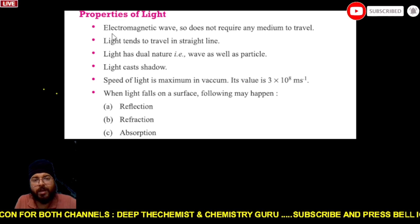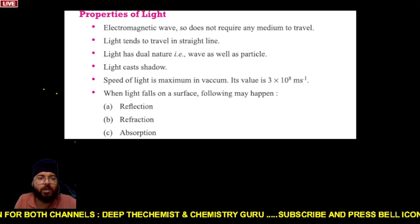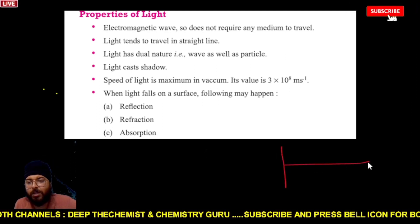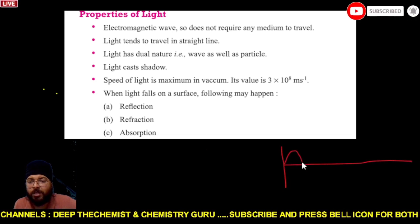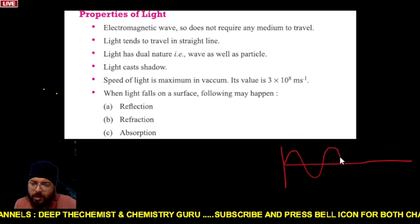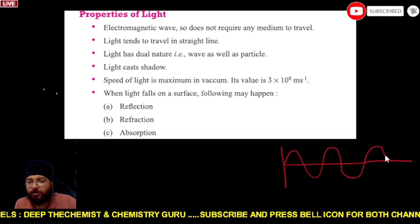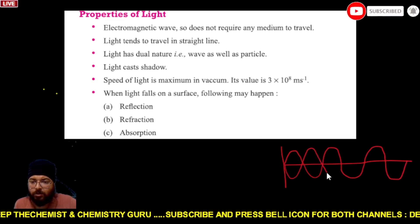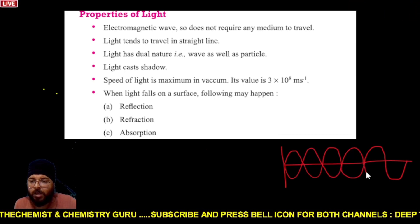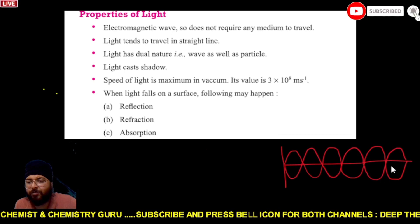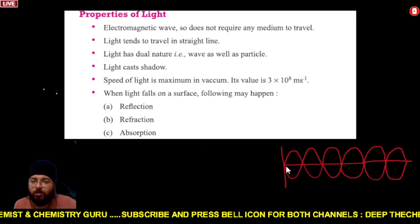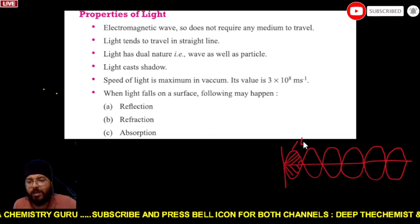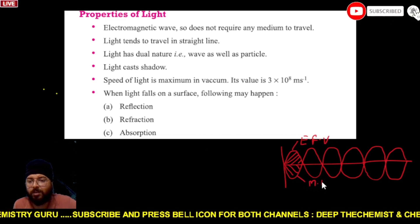Light is an electromagnetic wave. An electromagnetic wave has an electric field vector and a magnetic field vector, which are perpendicular to each other. This is the electric field vector, and this is the magnetic field vector.